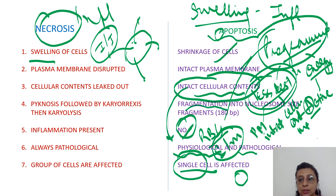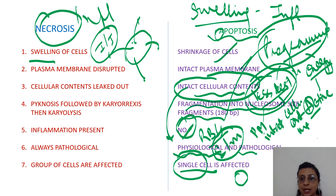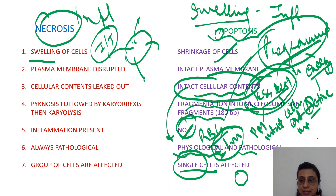Even the electrophoresis pattern will look like a planned step ladder appearance in apoptosis. So the only thing you need to remember: it is a planned form of injury, with lesser destruction but energy requirement — it is an active process.